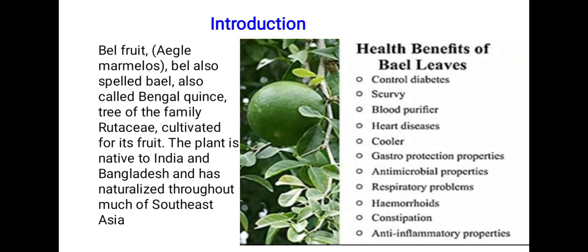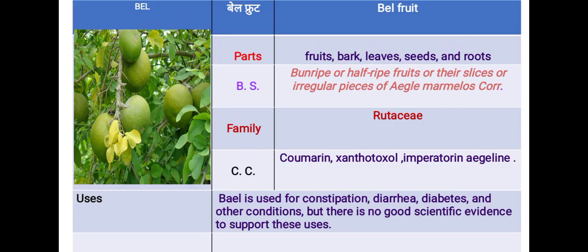Health benefits of Bael: used to control diabetes, scurvy, blood purification, heart disorders, gastro-protective properties, antimicrobial properties, respiratory problems, hemorrhea, constipation, and anti-inflammatory properties. The parts used include fruit, bark, leaves, seeds, and root.